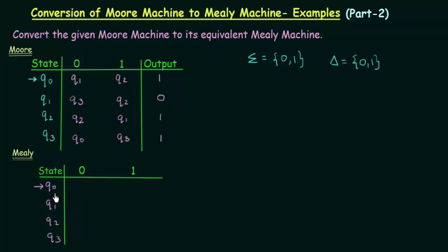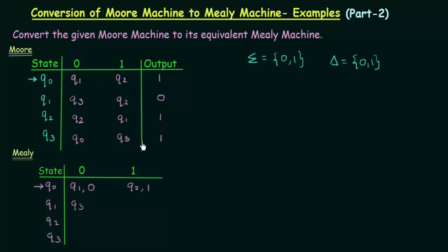Let's see for state Q0. Q0 on input 0, where does it go? It goes to Q1. And what is the output associated to Q1? Output associated to Q1 is 0. So I will give a 0 here as the output. And Q0 on input 1, where does it go? It goes to Q2. And what is the output associated to Q2? It is 1.